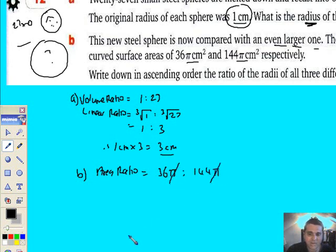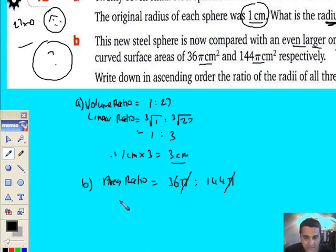So π divided by π is gone. Now, I don't even want to start simplifying that. What I will do is go down to the linear ratio. So if I go down to the linear ratio, I can find the radius of the super big sphere, that one right there.